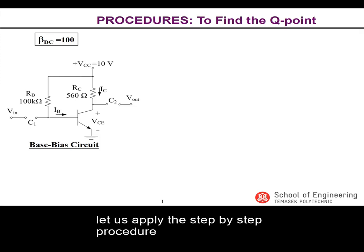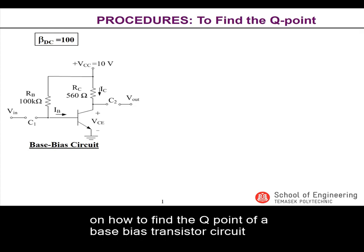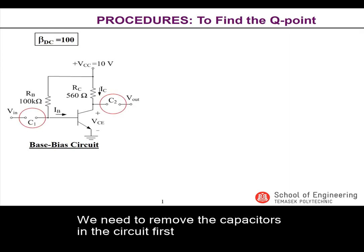Applying what we just learned earlier, let us apply the step-by-step procedure on how to find the Q-point of a base bias transistor circuit. We need to remove the capacitors in the circuit first.